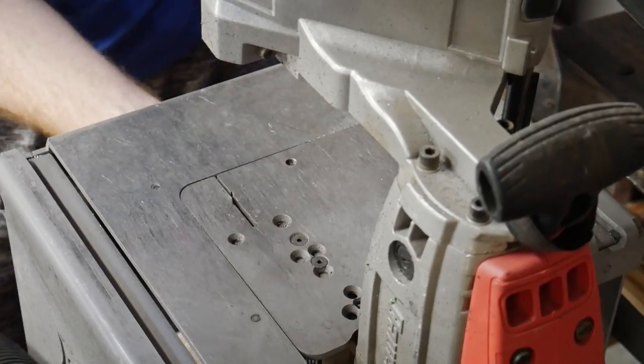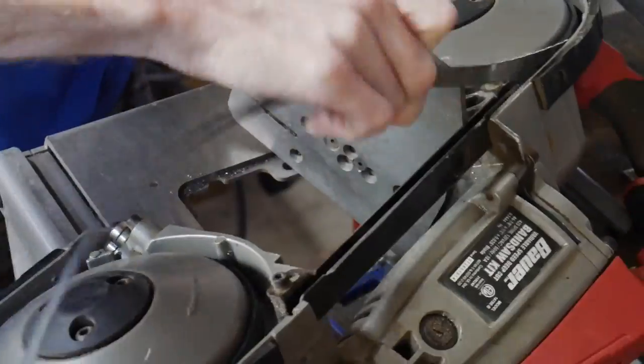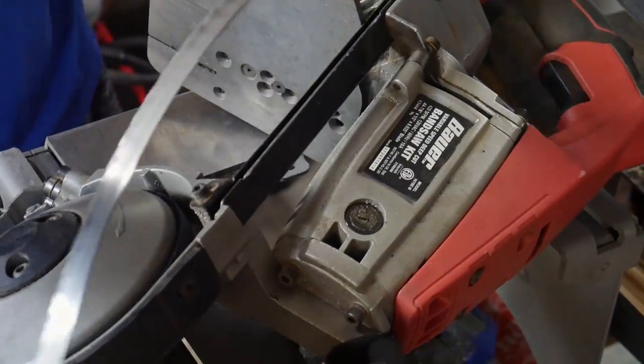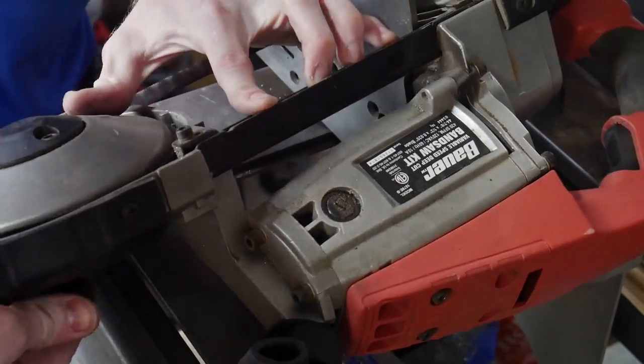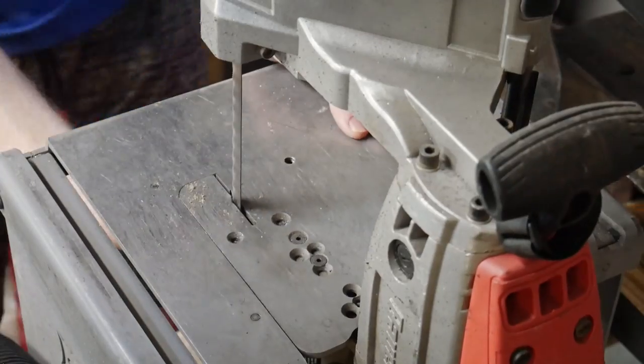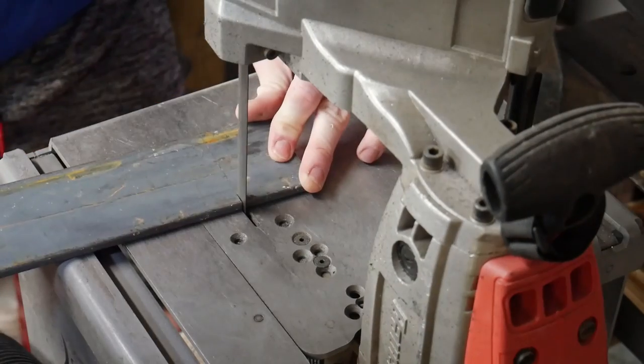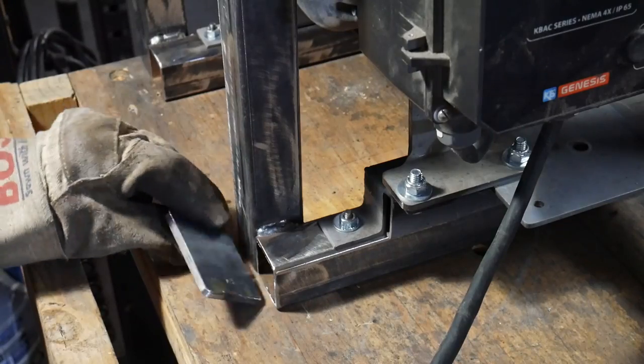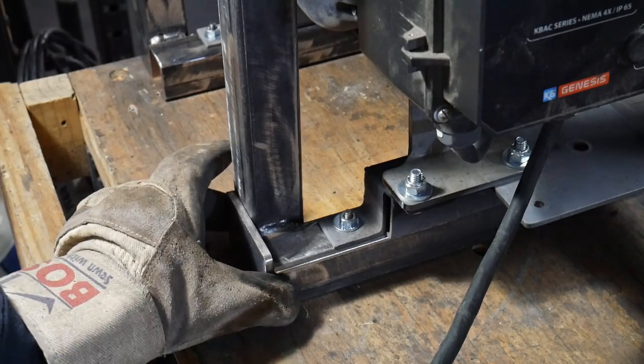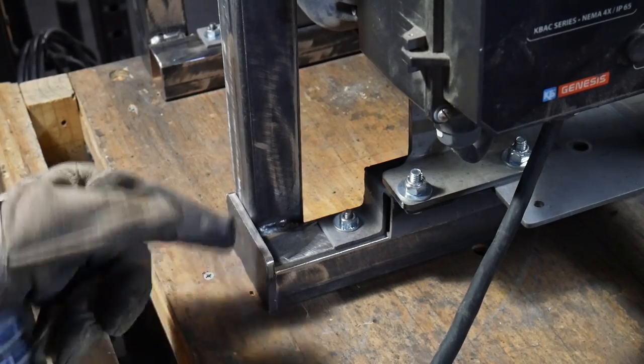People ask about the bandsaw blades I use frequently. These are the ones that I use - they seem to work fairly well. I cut through a bunch of knife steel with them, G10 and wood and all kinds of stuff so they seem like a pretty good general purpose blade. This is probably not the safest thing to do but I normally ride these blades out until they die.